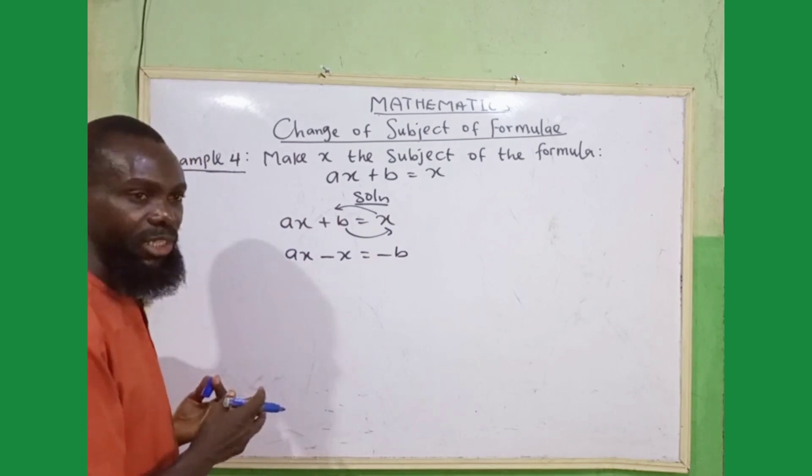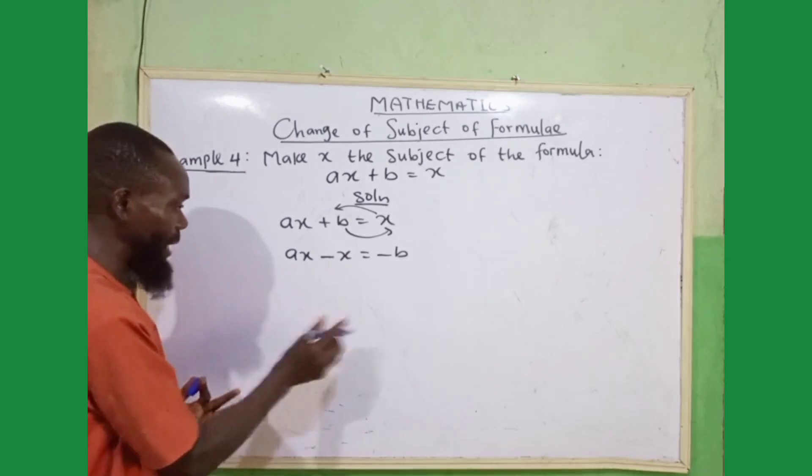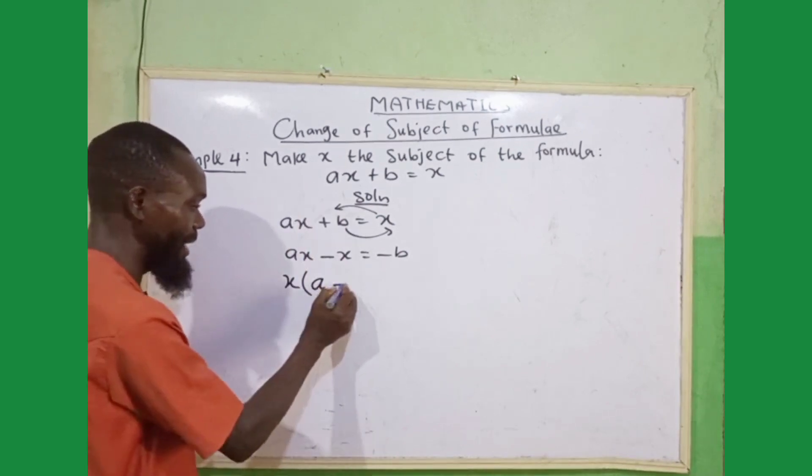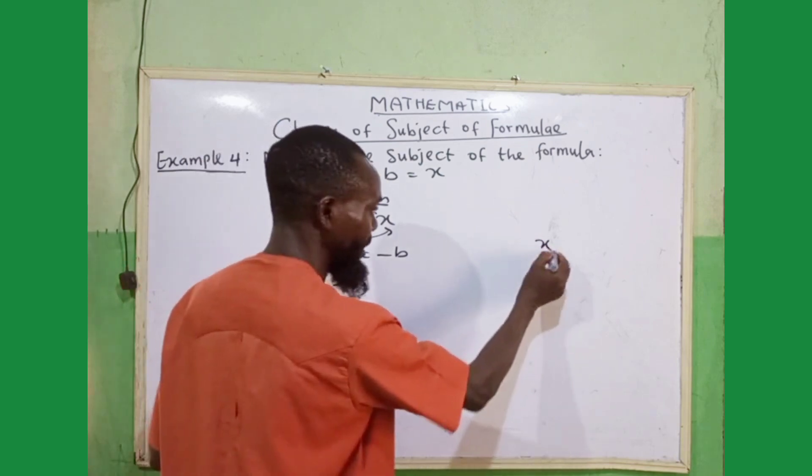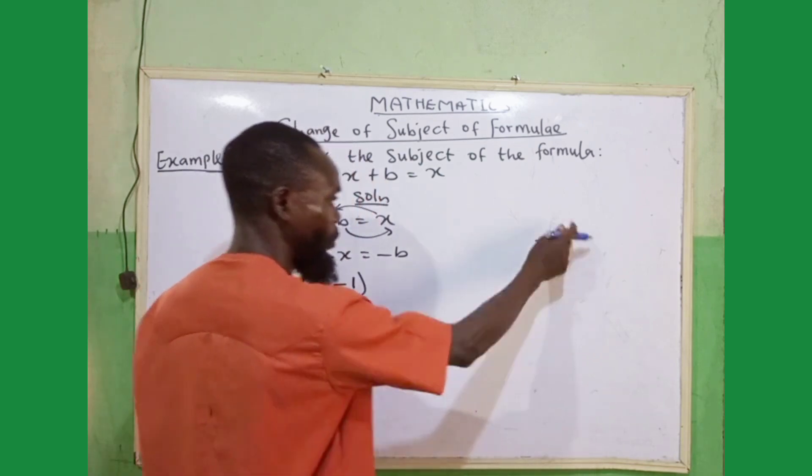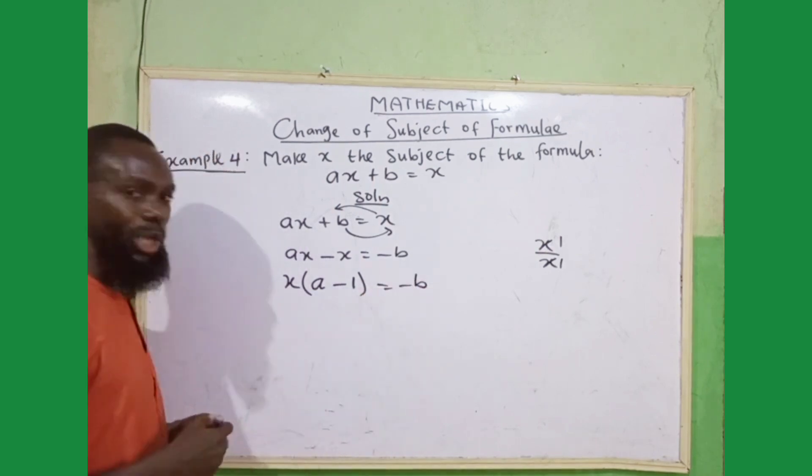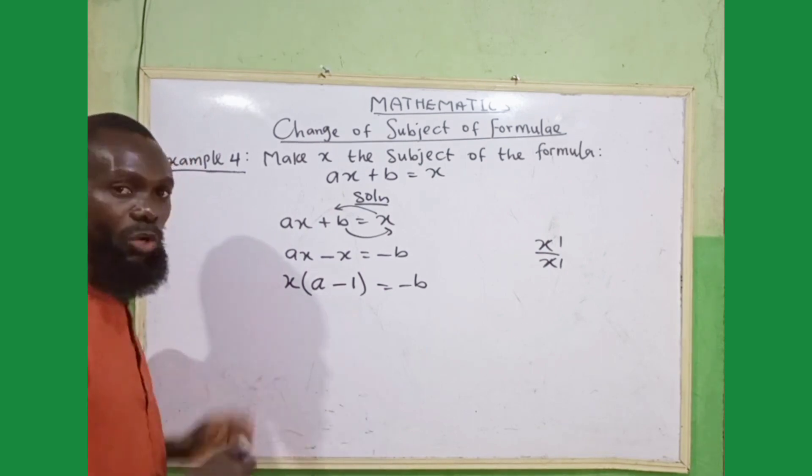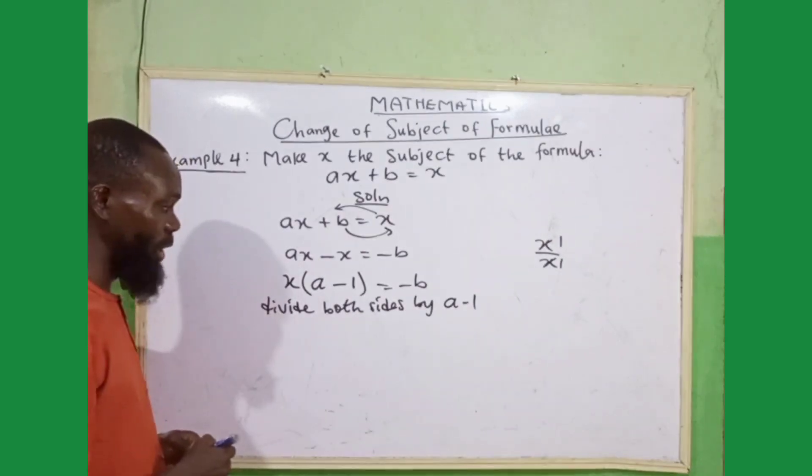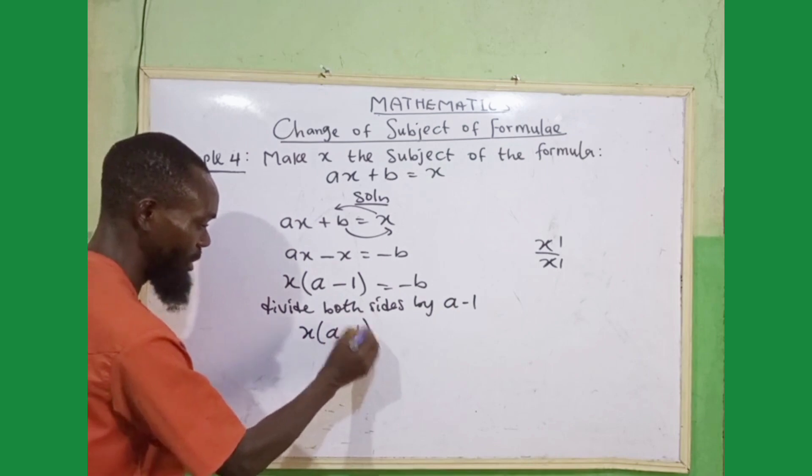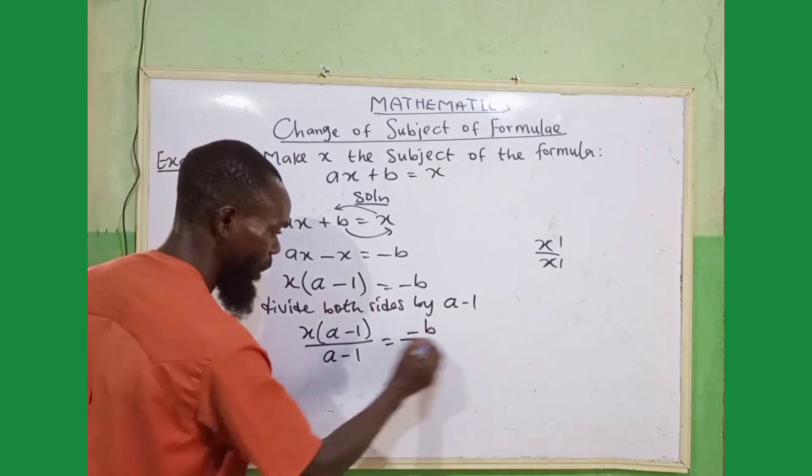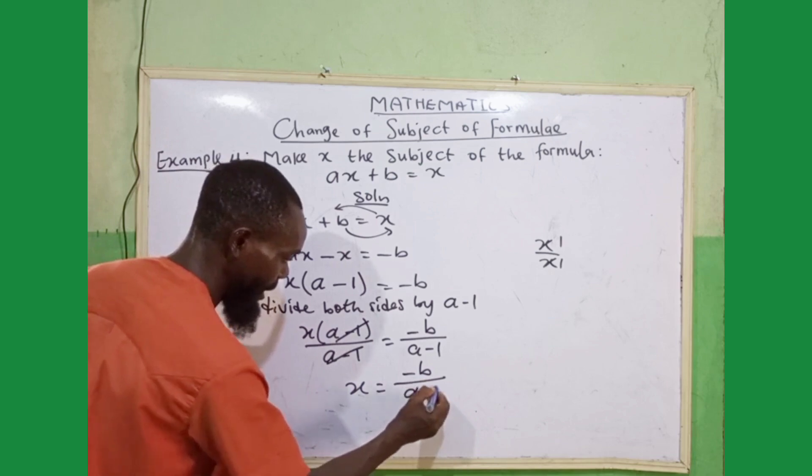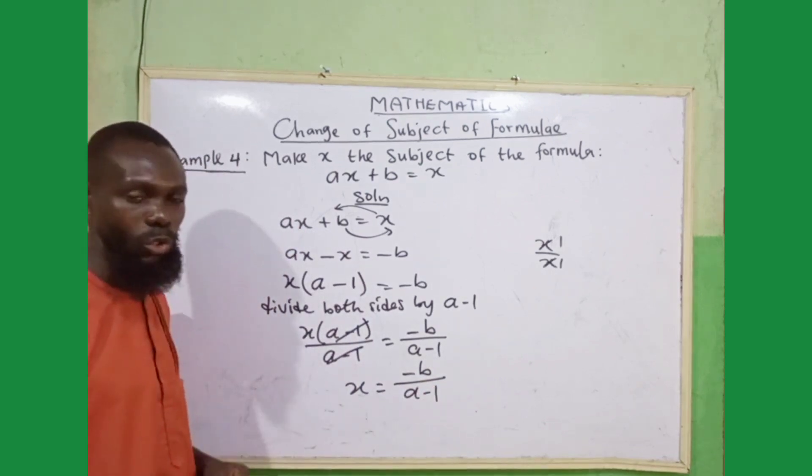As from our previous example 3, we have to collect like terms. By saying, x is common to both. Open your brackets. When you factor x out here, we are going to have (a - 1). When x goes into x, we have what? 1. That is x divided by x. x here 1, x here 1. 1 over 1 is 1. So, x(a - 1) = -b. According to what we explained in the previous example, to now get the value of x, we have to look for the opposite of this multiplication, which is division. So, divide both sides by (a - 1). x(a - 1)/(a - 1) = -b/(a - 1). This cancels this. x = -b/(a - 1). So, this is the value of x.